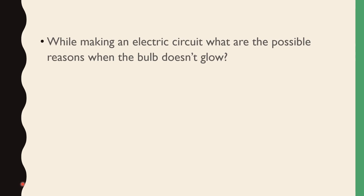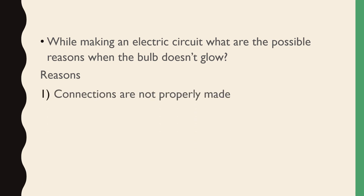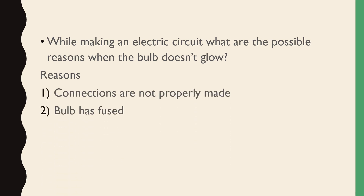While making an electric circuit, what are the possible reasons when the bulb doesn't glow? First, connections are not properly made. Second, the bulb has fused — when the filament of the bulb breaks, the circuit is not complete and the bulb will not glow.